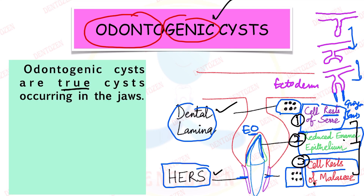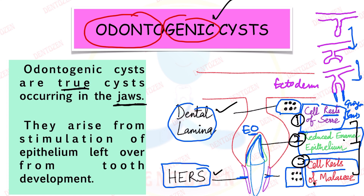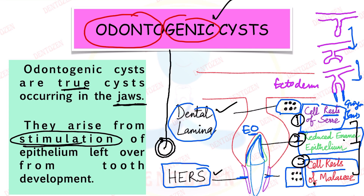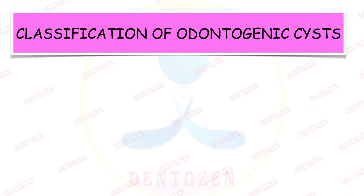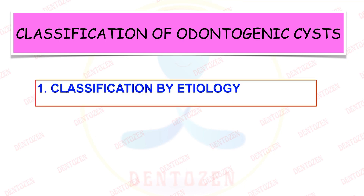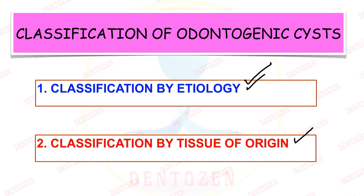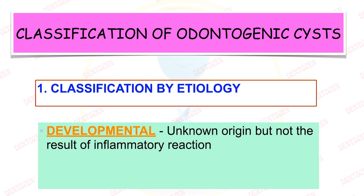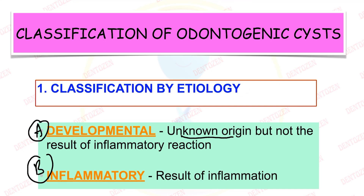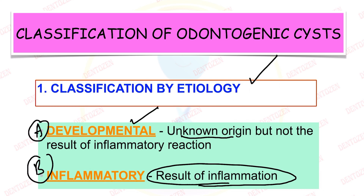So we have three sources: cell rests of Serres (remnants of dental lamina), reduced enamel epithelium, and cell rests of Malassez (remnants of HERS). These three sources can give rise to the epithelium of the cyst. Odontogenic cysts are true cysts because they have epithelial lining, and they are present in the jaws because odontogenic tissues are found there. When these epithelial cells present in the jaws get stimulated, they start to proliferate, form a hollow cavity, form the lining of this cavity, and it becomes an odontogenic cyst. The classification of odontogenic cysts is based on two things: etiology and tissue of origin.